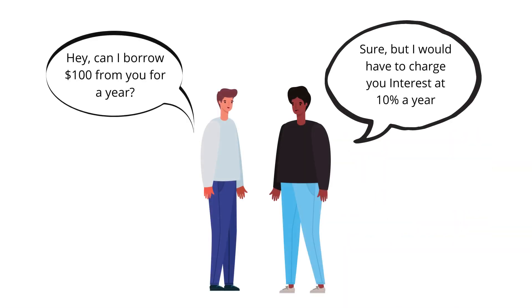For example, you have a friend who asks you to borrow $100 for a year. You don't want to just give the $100 away, so you tell your friend: how about you pay me $110 at the end of the year? The $10 will be the interest on the initial amount of $100. The interest rate will be 10%, because $10 is 10% of the initial $100. So your principal amount grows at 10% per year.